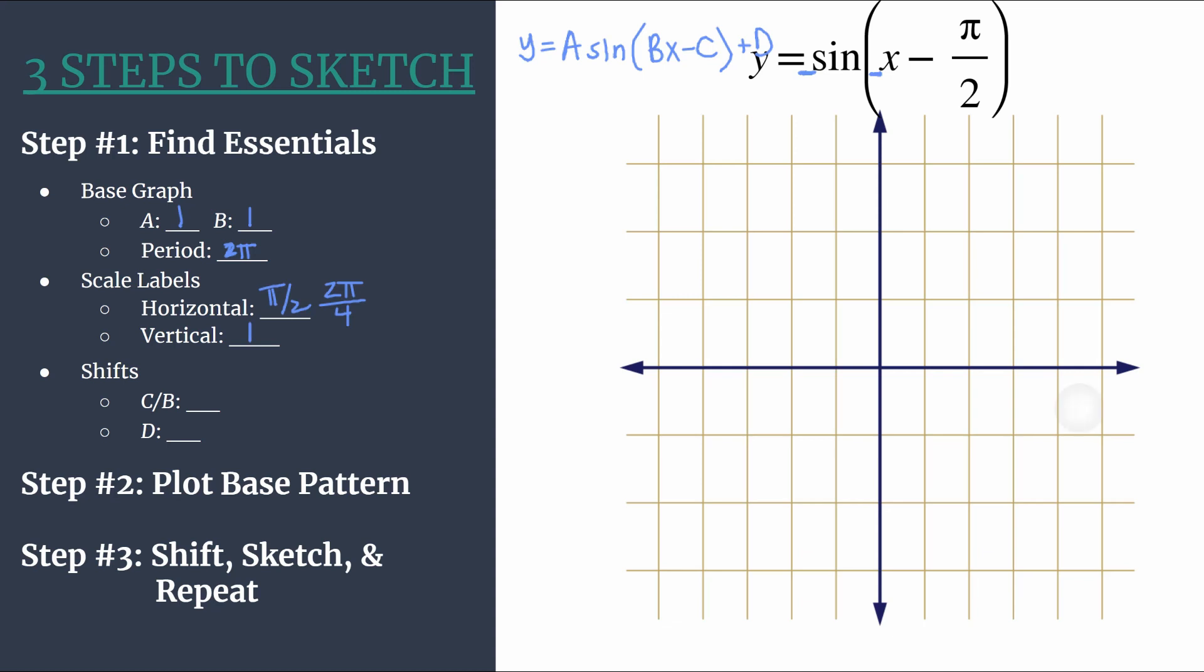Let's label our axes. Horizontally we're counting by pi over two: one pi over two, two pi over two which reduces, three pi over two, and four pi over two. Your fourth tick mark with this method should be matching your period and it is, it's two pi. We could keep going if we wanted: five pi over two, and it'll be the same in the negative direction: negative pi over two, negative three pi over two, negative two pi, and negative five pi over two.